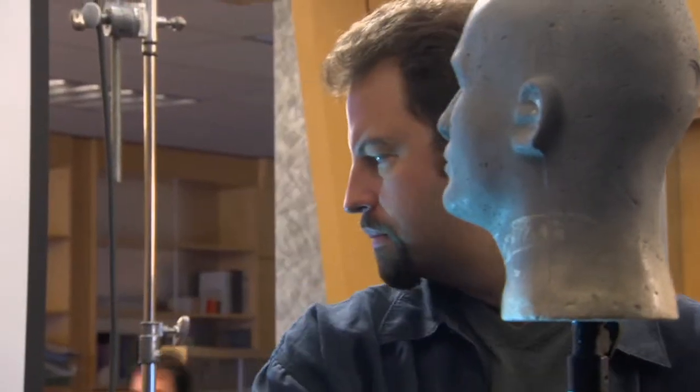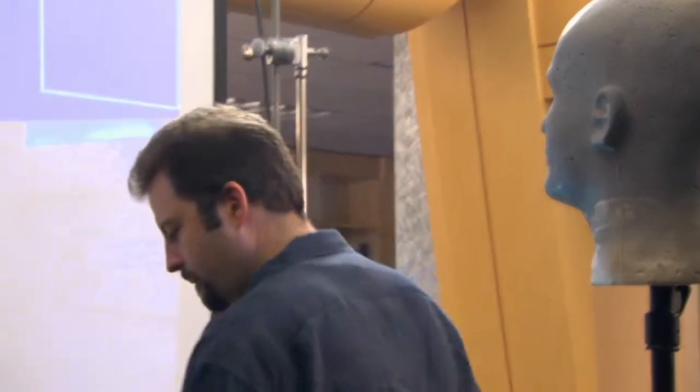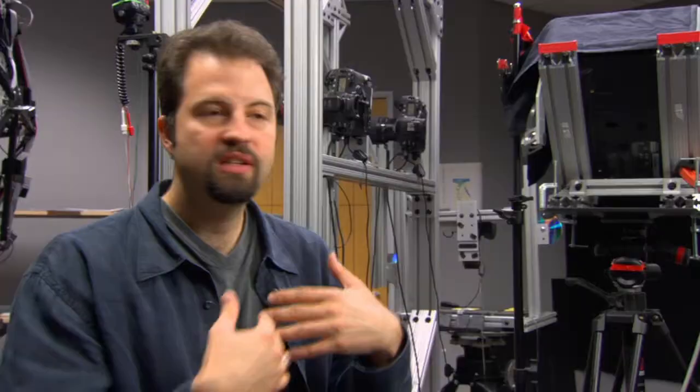First, the person is scanned to capture the 3D images. The scanning system is done by projecting basically a series of stripe patterns on the face very rapidly, and we look at how those stripes drape over the shape of the face. And by viewing that with another camera, we can figure out the 3D shape of the face and basically a photo of the face as well in real time.